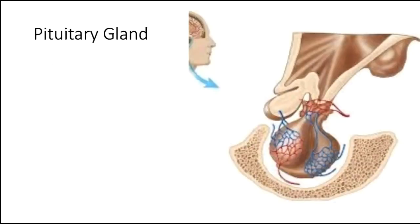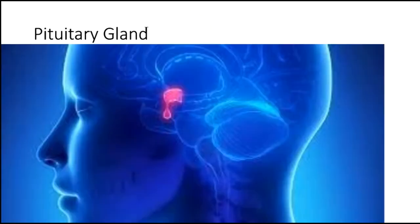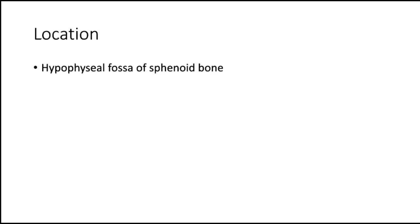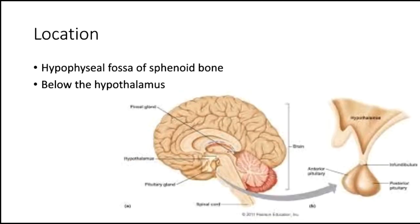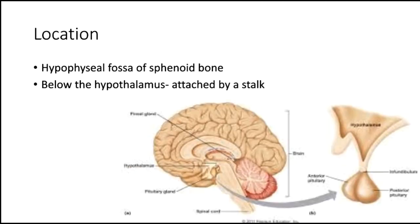Pituitary gland. It is otherwise known as the master endocrine gland, situated in the hypophysial fossa of the sphenoid bone, below the hypothalamus. It is attached to the hypothalamus by a stalk, and they function together as a unit.